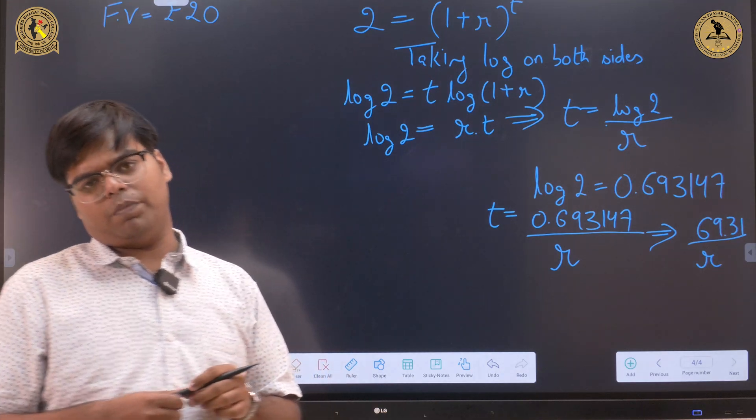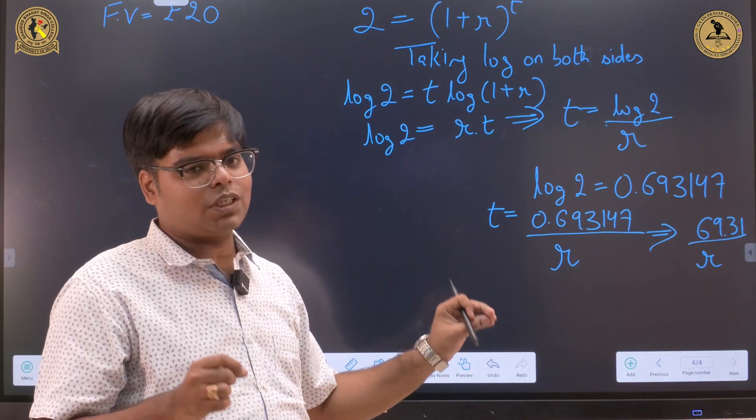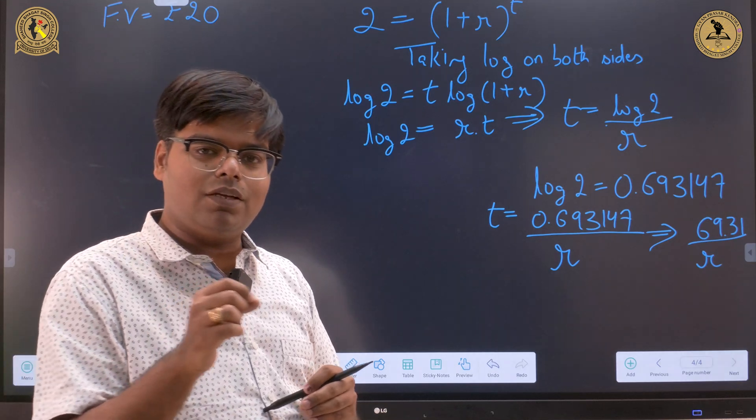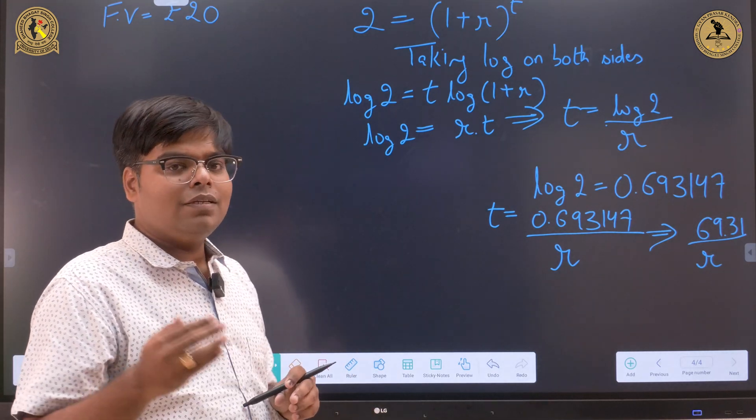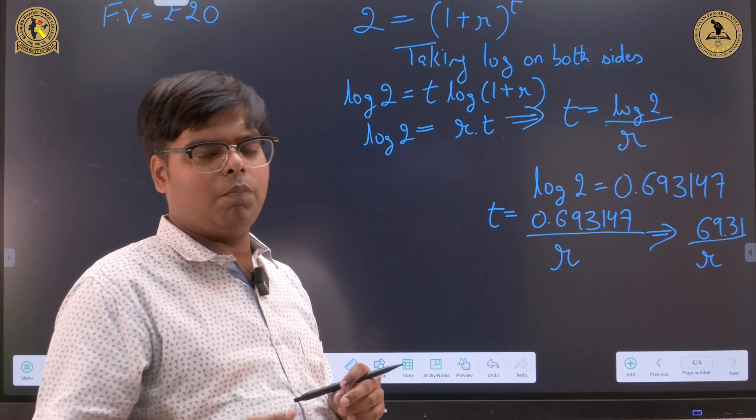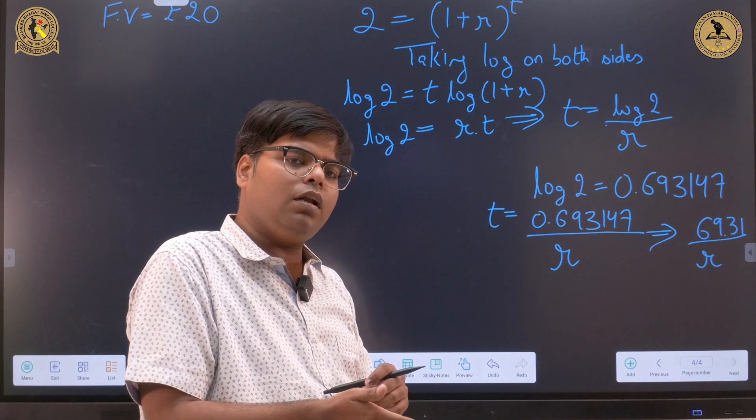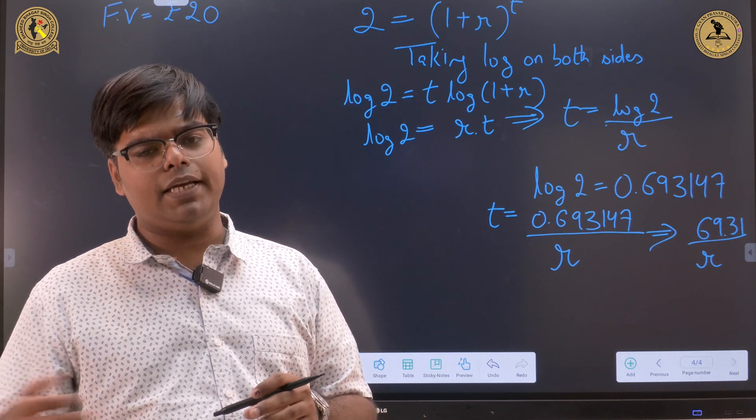The answer is very much simple. There are two major reasons. Number one: the value of 69.31 is difficult to remember in comparison to 72. Second is, the number 72 is divisible by almost many numbers. 72 is divisible by 2, 3, 4, 6, 8 and 9. So that's why the rule of 72 has gained popularity in our finance area.